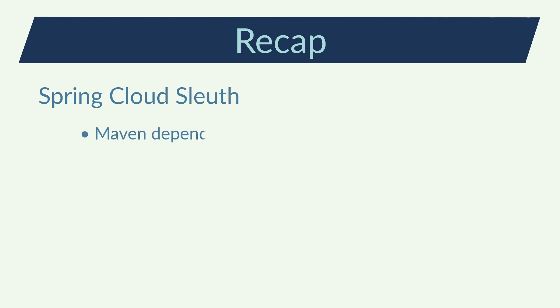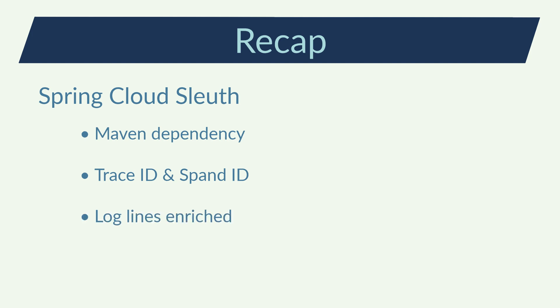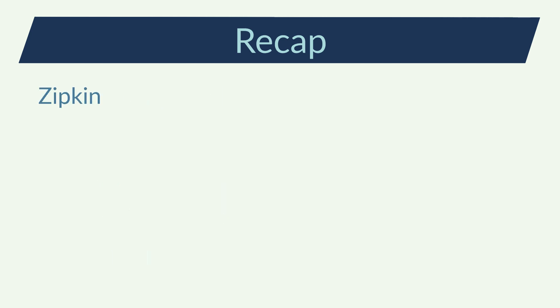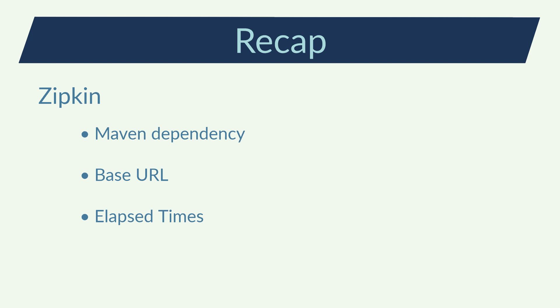A quick recap before ending this video. For Spring Cloud Sleuth, I've added the Sleuth Maven dependency. By default, it will create a trace ID and a span ID for each request of the microservices. Those trace ID and span ID will be added at each line of log. I can also add new named span IDs with the new span annotation. For Zipkin, I've also added the Zipkin Maven dependency and the location of the instance to let Sleuth communicate with Zipkin. In Zipkin, I can see the time elapsed at each microservice and at each span for a single request.